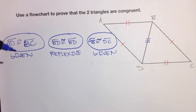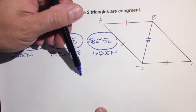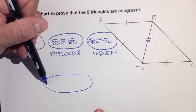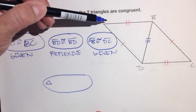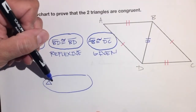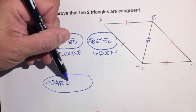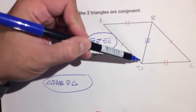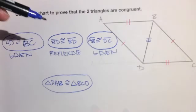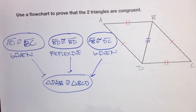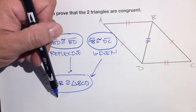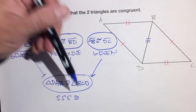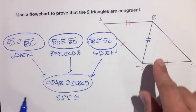Now we have three congruent bubbles — one, two, three. Our final bubble: triangle DAB is congruent to triangle BCD. Don't forget your arrows. And the reason: all three bubbles talk about pairs of sides — so it's side-side-side congruency. We just proved that these two triangles are congruent!